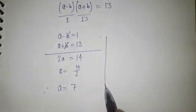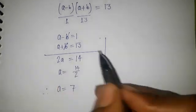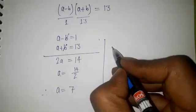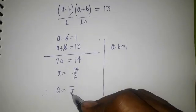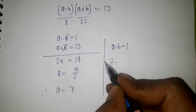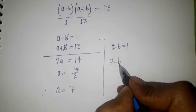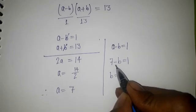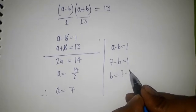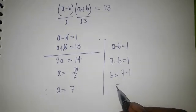And if we have the value for a, I can find the value for b, because we have a - b = 1. And here I have a = 7, so after putting the value for a, 7 - b = 1, so 7 - 1 equals...